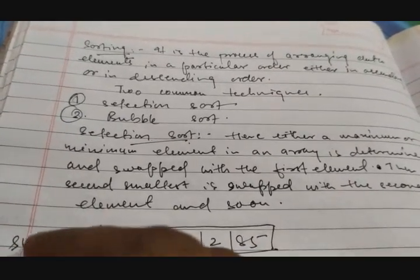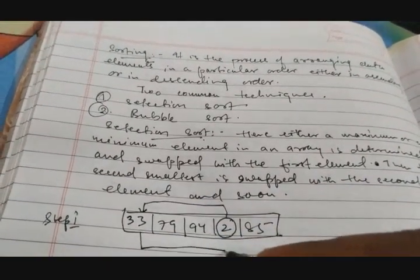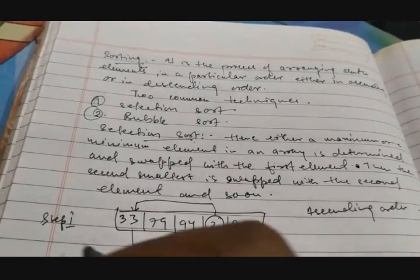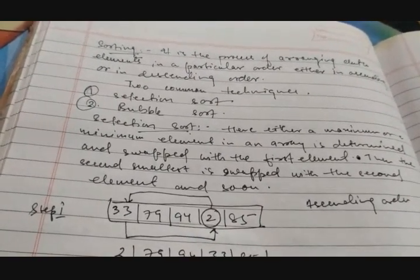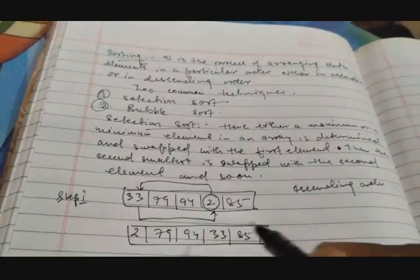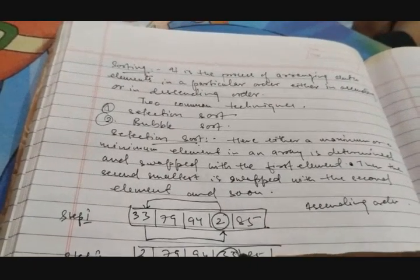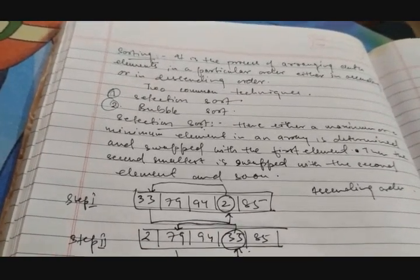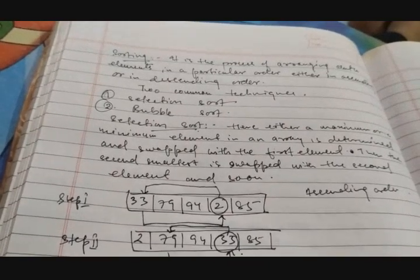In step one, the smallest element — which is 2 — gets swapped with the first element since we are going for ascending order. So it becomes: 2, 79, 94, 33, 85. Now in step two, 2 is already sorted. Among the remaining elements, 33 is the smallest and it gets swapped with the second element. In step three, we get: 2, 33, 94, 79, 85. These two are now sorted.